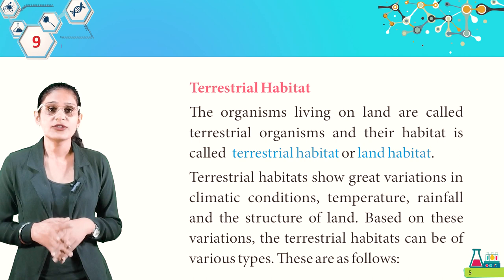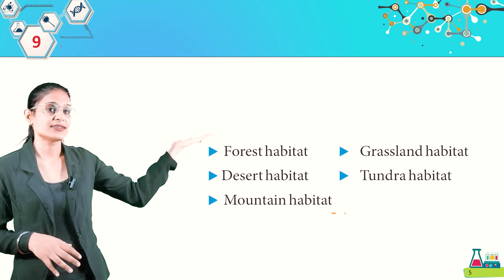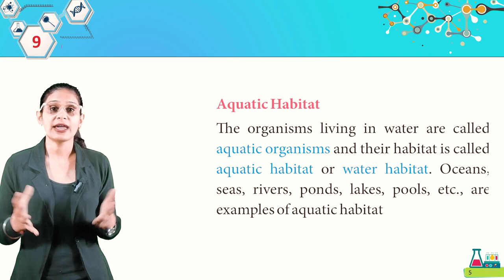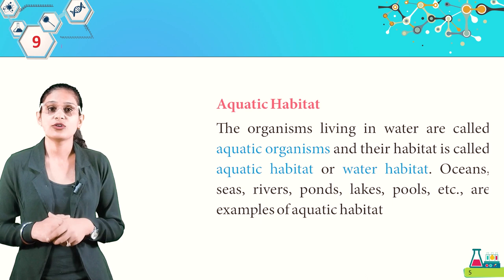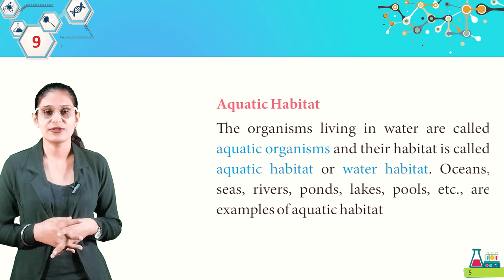Based on different temperature and land structure, terrestrial habitat has different types: forest habitat, grassland habitat, desert habitat, tundra habitat, and mountain habitat. Organisms living in water are called aquatic organisms and their habitat is called aquatic habitat or water habitat. Oceans, seas, rivers, ponds, lakes, and pools are examples of aquatic habitats.